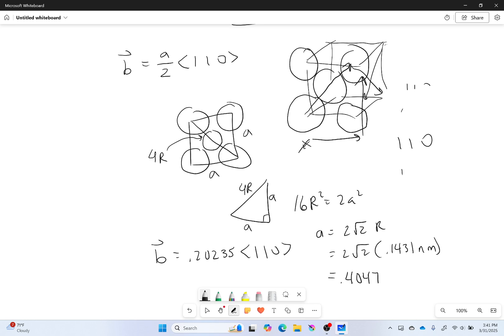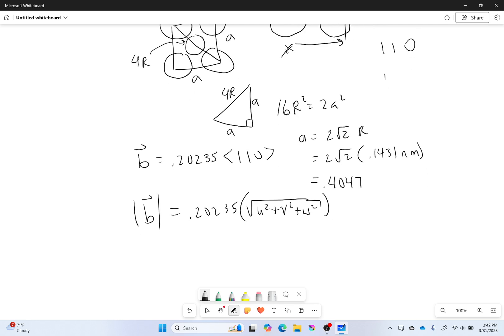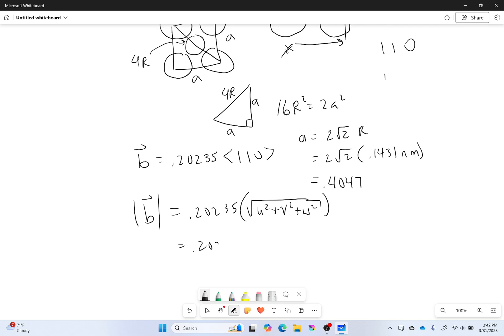Now what is the length of this Burgers vector? Well, the magnitude of this Burgers vector is simply going to be equal to 0.20235 times the square root of u squared plus v squared plus w squared. So that'll be 0.20235 times the square root of 1 squared plus 1 squared. If I put that in my calculator, it comes out to be 0.2862 nanometers.